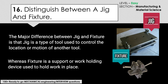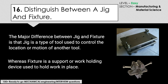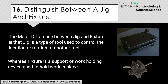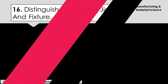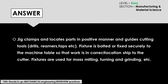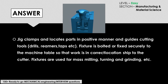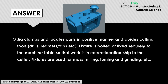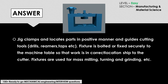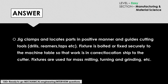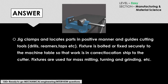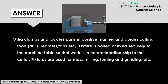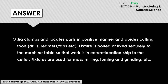In metal and woodworking, both jigs and fixtures are essential tools used. A jig clamps and locates parts in a positive manner and guides cutting tools like drills, reamers, taps, etc. Whereas a fixture is bolted or fixed securely to the machine table so that the work is in the correct location to the cutter or the machine tool.